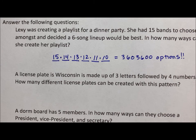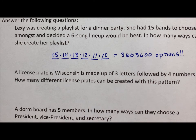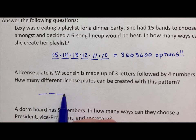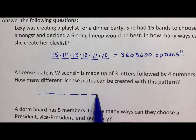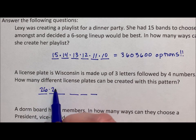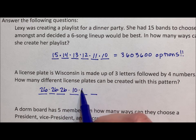Next, let's look at license plates. If you're in Wisconsin, the license plate is made up currently of three letters and four numbers. How many different license plates can be created? There are 26 letters in the alphabet and 10 numbers, 0 through 9.